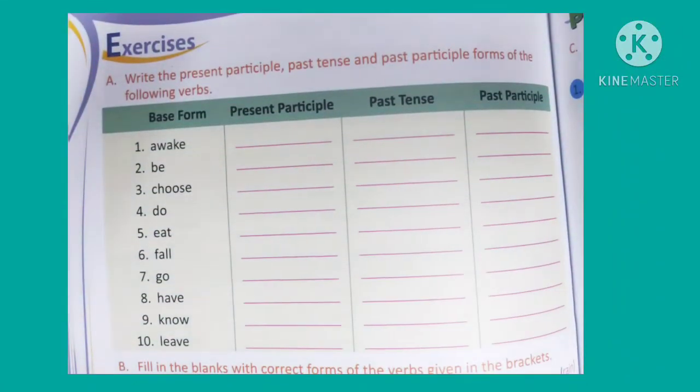First we will do Exercise A: write the present participle, past tense, and past participle forms of the following verbs. In this exercise you have to write present participle (base form plus -ing), past tense (second form), and past participle (third form) of the verb. The base form is given, so let us start.